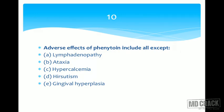Question number ten: adverse effects of phenytoin include all of the following EXCEPT — A lymphadenopathy, B ataxia, C hypercalcemia, D hirsutism, and E gingival hyperplasia. Phenytoin does cause lymphadenopathy. Ataxia is due to vestibular and cerebellar symptoms. Hirsutism is a known adverse effect of phenytoin.